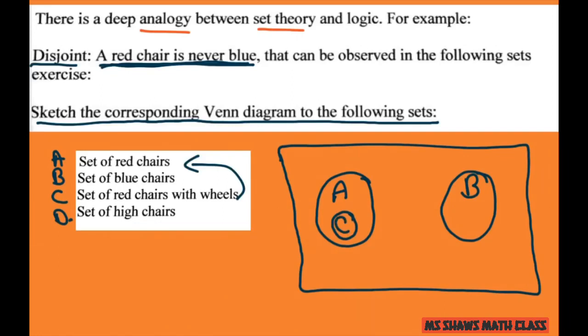And the set of high chairs could be both blue and red, so that's your D. So you could just draw an oval here and make that set D.